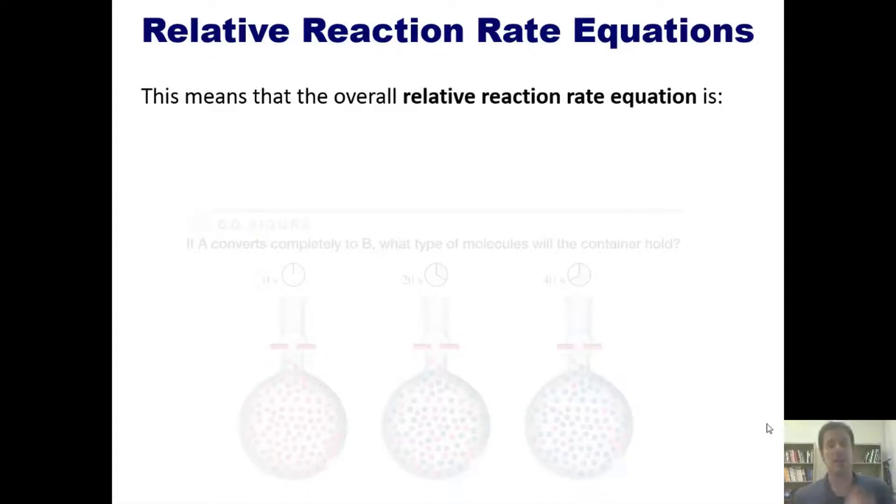Here's how. In this scenario, the overall relative reaction rate equation is negative one over two times delta concentration of HI over delta t equals delta H2 concentration over delta t,